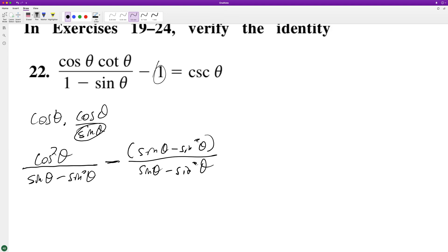So then what we do is distribute this minus sign. So we get cosine squared theta. We can combine them now because they have a common denominator minus sine theta plus sine squared theta over sine theta minus sine squared theta.